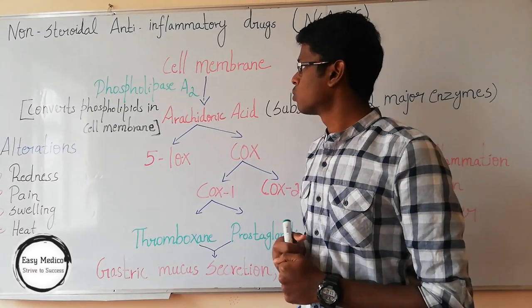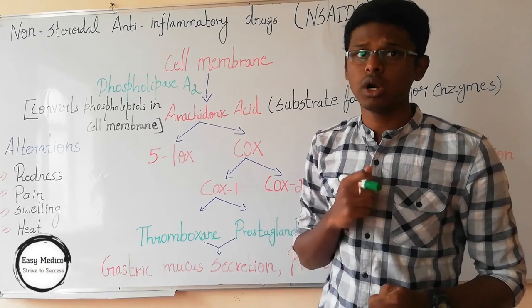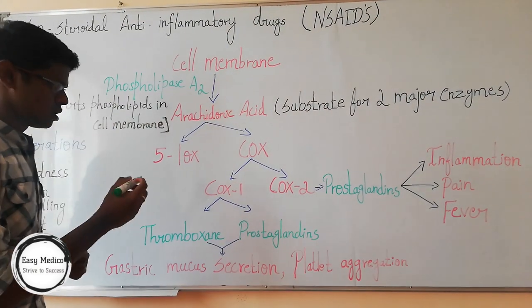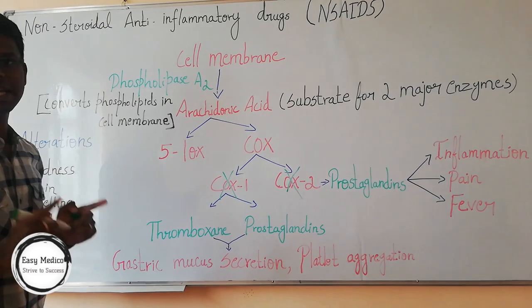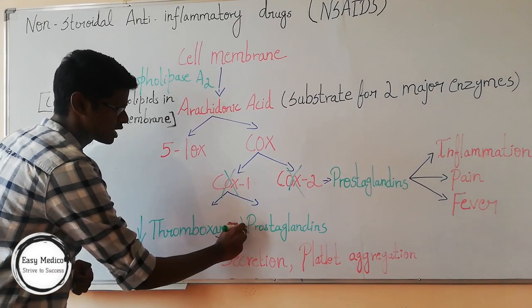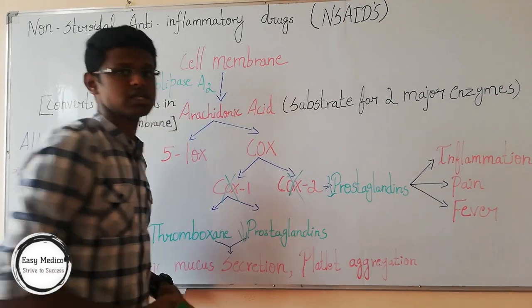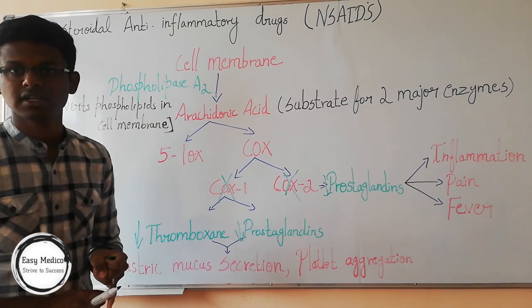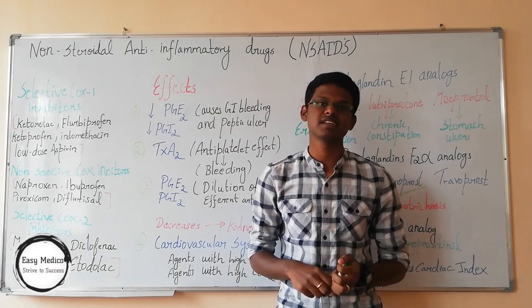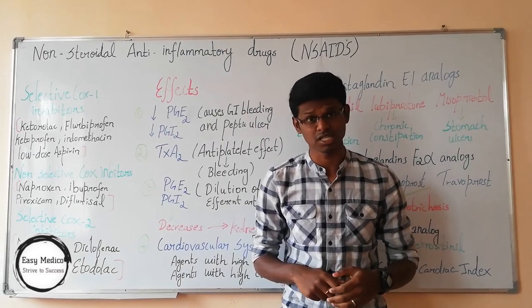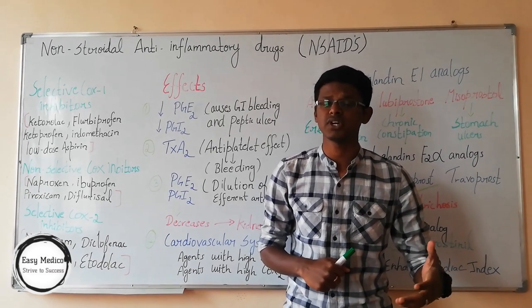So, in order to understand NSAIDs, what happens is this is the usual mechanism which takes place in inflammation. The work of NSAIDs involves inhibition of COX-1 and COX-2, which ultimately decreases the levels of thromboxane and prostaglandin. This decrease in prostaglandin causes anti-inflammatory effect, antipyretic effect, etc. So, we discussed what happens during inflammation and how inhibition is the role of NSAIDs.